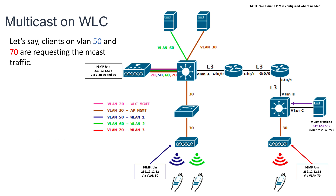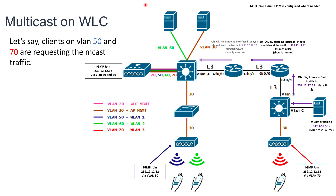Once the traffic reaches the switch, it checks its 'show ip mroute' and will start forwarding it over the links where PIM is enabled and where it has received the PIM join. The process repeats over all the links. In the 'show ip mroute' output you will see the IP address of the remote server, the group IP address, and then on the outgoing interfaces list, the interfaces towards which we're sending the Multicast traffic.